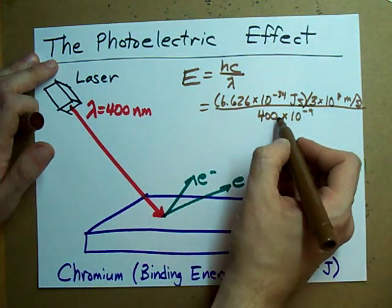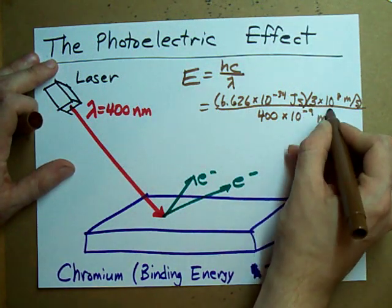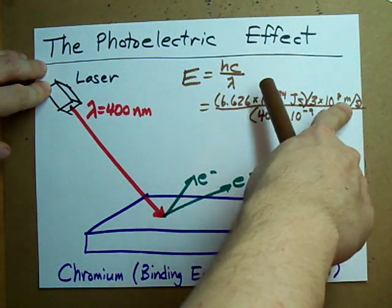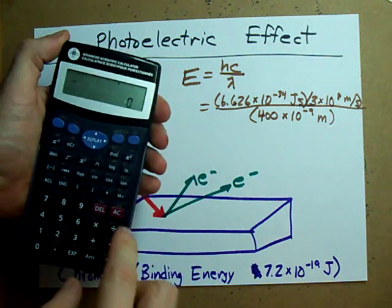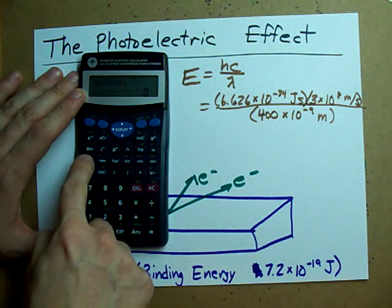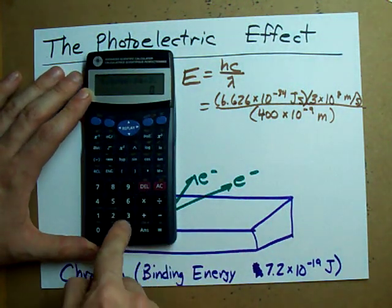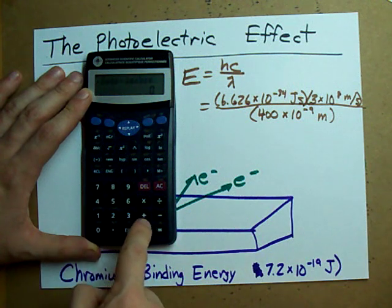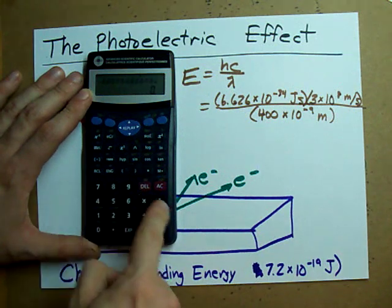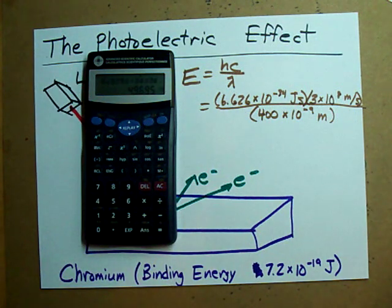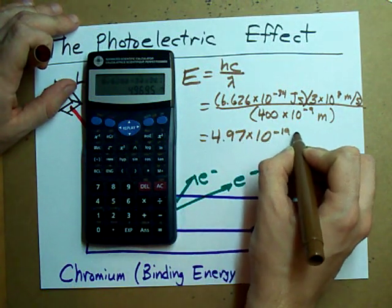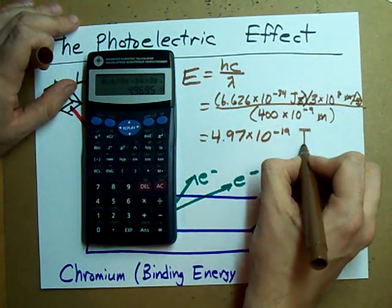I've converted nanometers into times 10 to the negative 9 meters — that's just my conversion for nanometers because my units have to match. So when I do this on my calculator: 6.626 times 10 to the negative 34, times 3 times 10 to the 8, divided by 400 times 10 to the negative 9, I get 4.97 times 10 to the negative 19. Seconds cancel, meters cancel — joules.